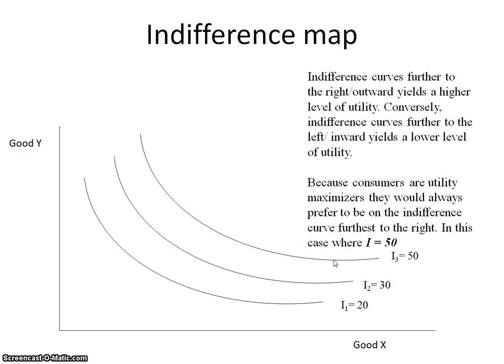If the consumer wants to get maximum satisfaction, maximum utility, they will prefer to be on I3, as opposed to I2 and I1, simply because I3 has the highest degree of utility, which is a value of 50.